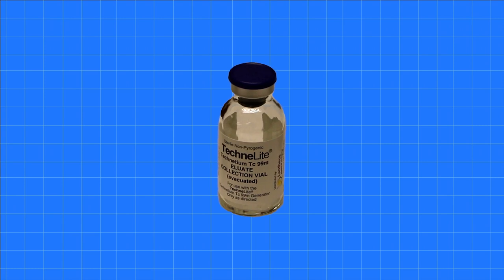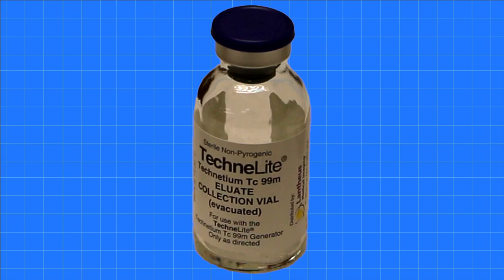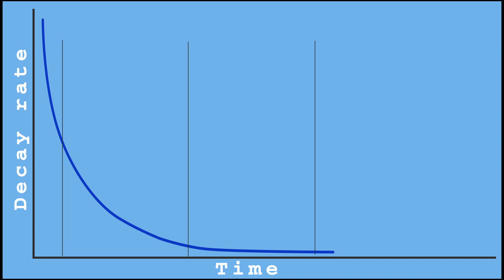The first method involves obtaining a 100 millicurie source of technetium-99 and obtaining a reading immediately when it arrives. Although this is a time-consuming process, periodic checks throughout the decay process or the use of automated instruments make it a feasible test process.